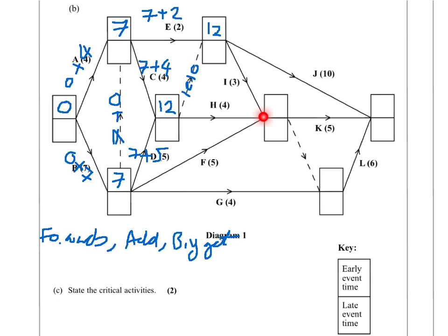Notice I'm going forwards the whole time, I'm adding, and I'm taking the biggest. So now I've come to this box here. It's either seven plus two, or it's twelve plus the dummy activity, which has a weight of zero. Seven plus two is nine. Twelve plus zero is twelve.